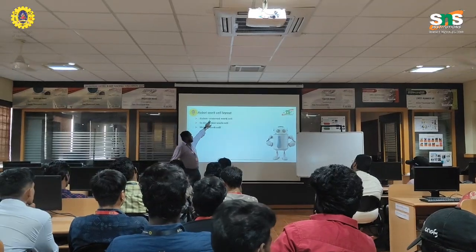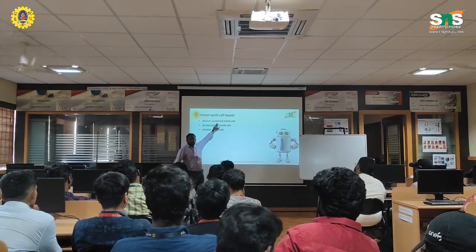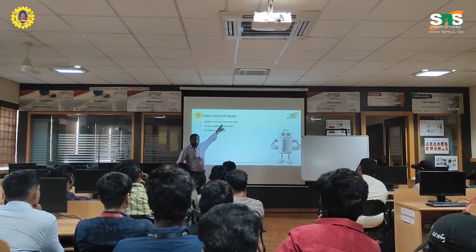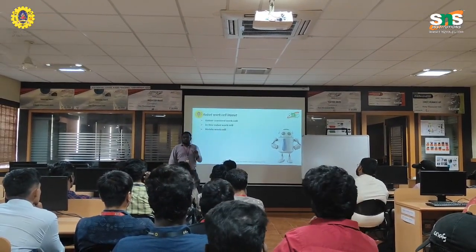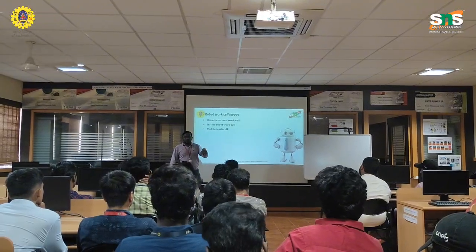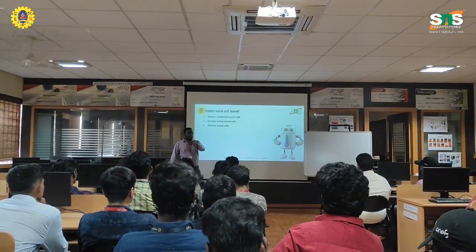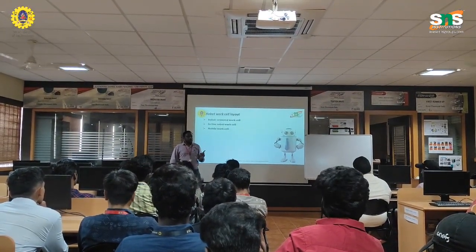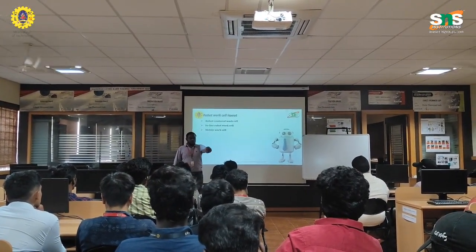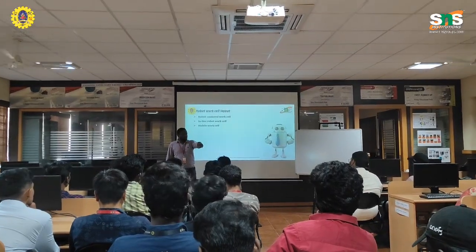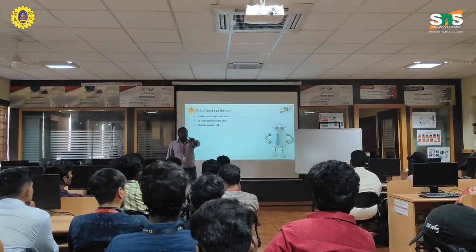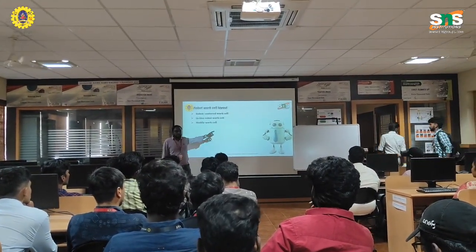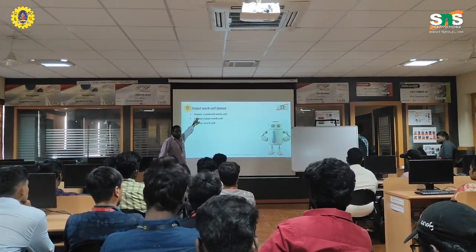Center robot — there is only one robot, it is in the center position, and it has to move around the entire work area. Inline robot — it is also in a center position and has to cover the robot center work.